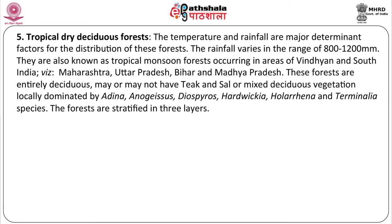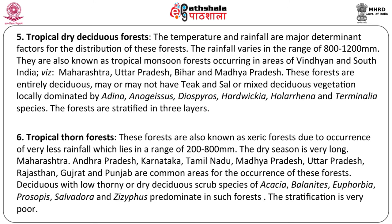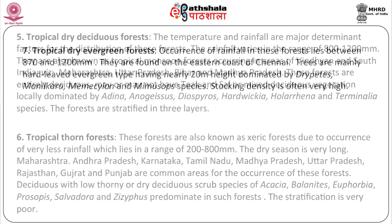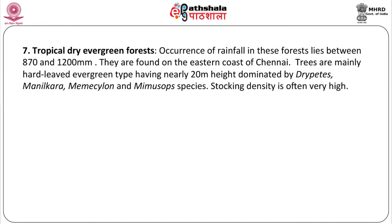Tropical dry deciduous forests: temperature and rainfall are major determinant factors for the distribution of these forests. The rainfall varies in the range of 800 to 1200 millimeters. Next is the tropical thorn forest. These forests are also known as xeric forests due to occurrence of very less rainfall which lies in the range of 200 to 800 millimeters. The dry region is very long. Maharashtra, Andhra Pradesh, Karnataka, Tamil Nadu, Madhya Pradesh, Uttar Pradesh, Rajasthan, Gujarat and Punjab are common areas for the occurrence of these forests. Tropical dry evergreen forests: occurrence of rainfall in these forests lies between 870 and 1200 millimeters. They are found on the eastern coast of Chennai. Trees are mainly hard-leaved evergreen type having nearly 20 meter height.